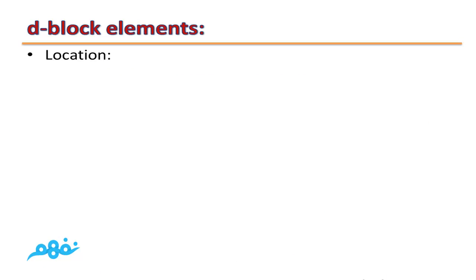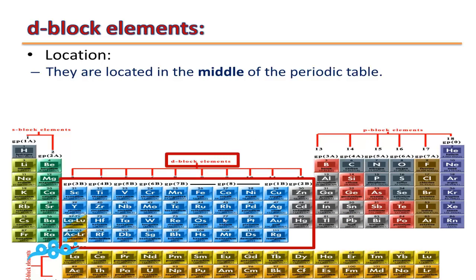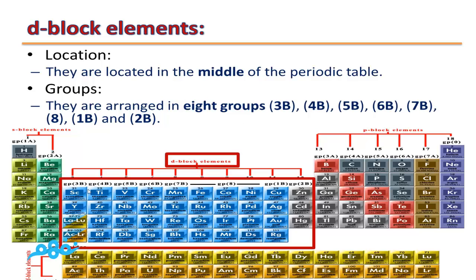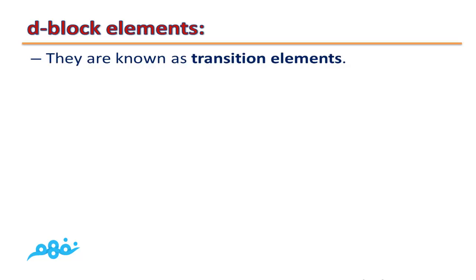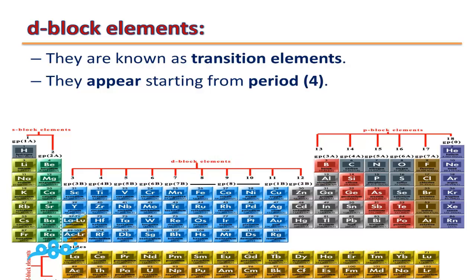D block elements are located in the middle of the modern periodic table and contain 8 groups: 3B, 4B, 5B, 6B, 7B, Group 8 (which contains 3 columns), 1B, and finally 2B - 8 groups arranged in 10 vertical columns. D block elements are also called transition elements and start to appear from Period 4; there are no D block elements in periods 1, 2, or 3.